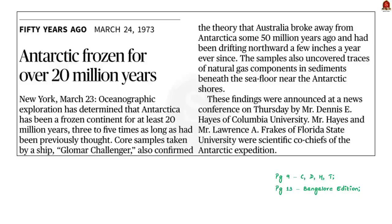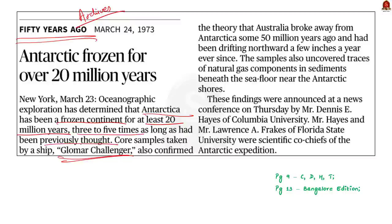This is a small article from the archive session — a news that was reported 50 years back from today. It is about the analysis of samples taken by a ship named Glomar Challenger. Oceanographic exploration at that time had determined that Antarctica has been a frozen continent for at least 20 million years — three to four times longer than previously thought. It also confirmed the theory that Australia broke away from Antarctica some 50 million years ago, and found traces of natural gas components in sediments beneath the seafloor near the Antarctic shores.